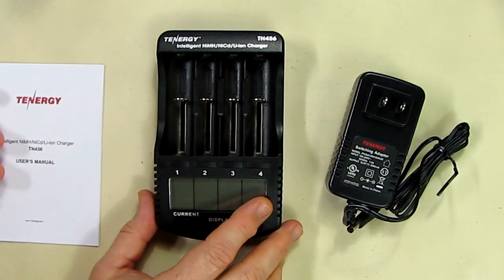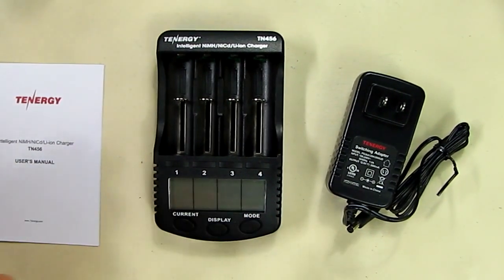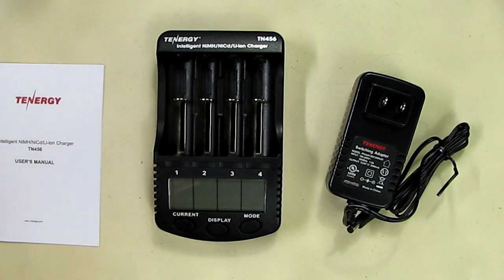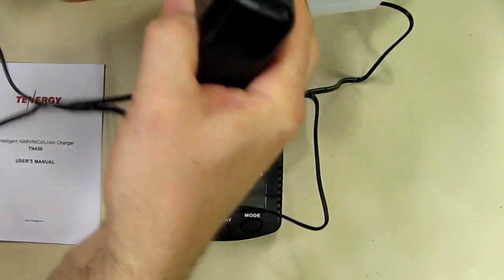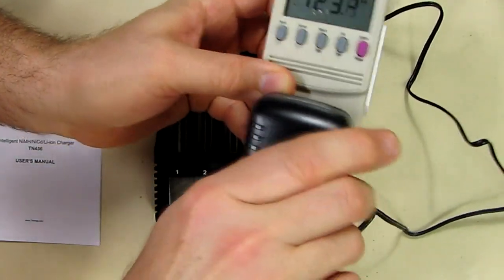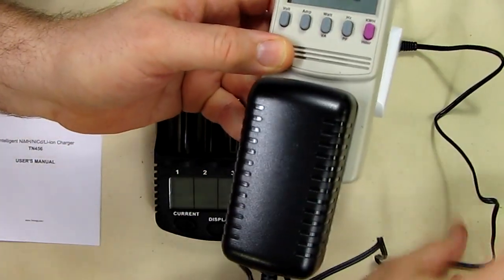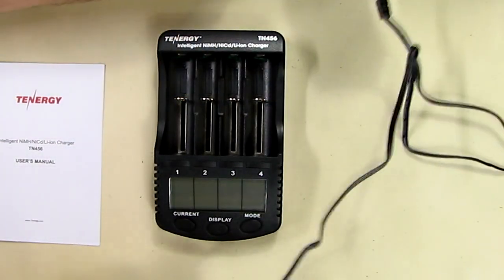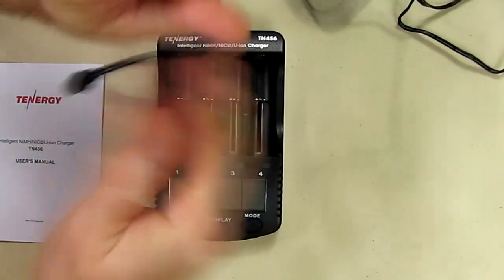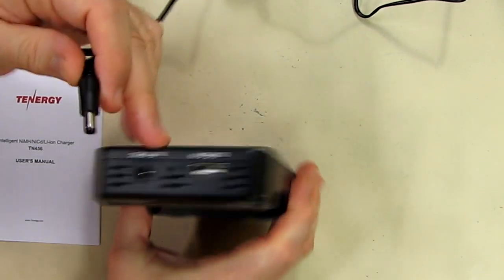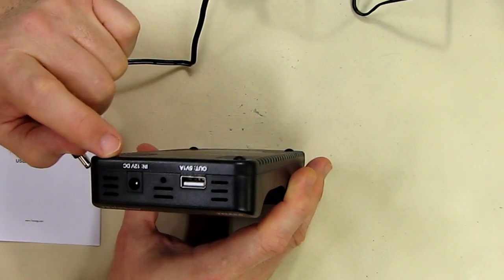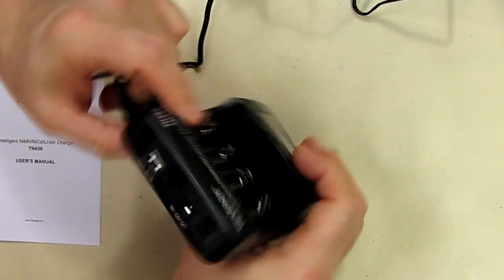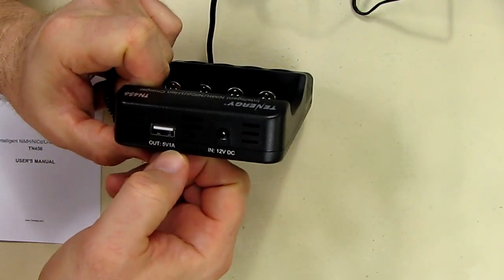So let's power this thing up and let's try some batteries. First thing I'm going to do is plug the AC adapter into a kilowatt meter and I can look at the performance. On the back of this unit you can see it has DC in 12 volts and also has something out 5 volt 1 amp.